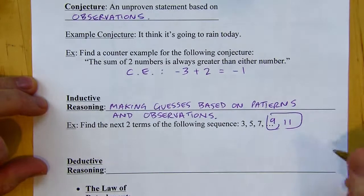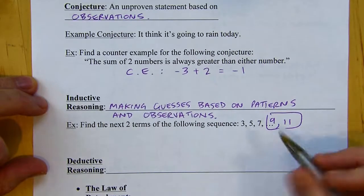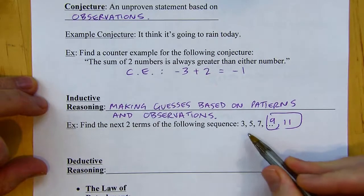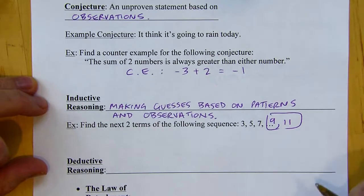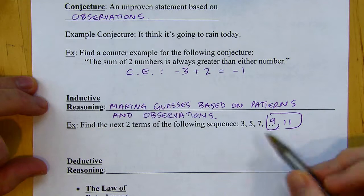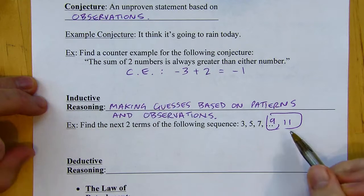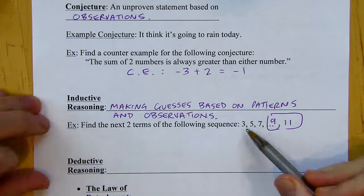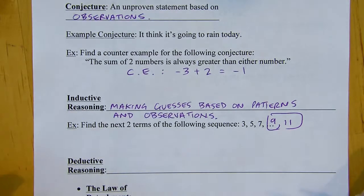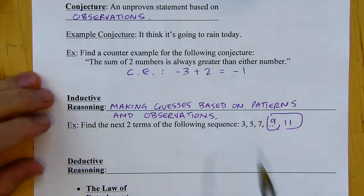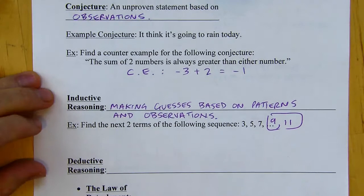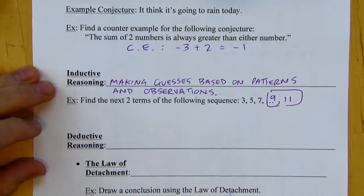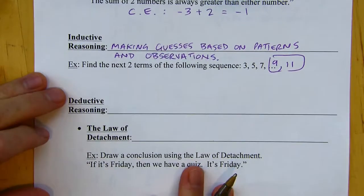That's a really good guess because we have a lot of experience with this kind of pattern — we're just adding two to get from term to term. But I don't know for sure if those are the next two terms. It's just a really good guess. Maybe there's some other pattern. It doesn't give me a rule — it just tells me what the first three terms are, so I'm guessing based on those. That's an example of inductive reasoning.